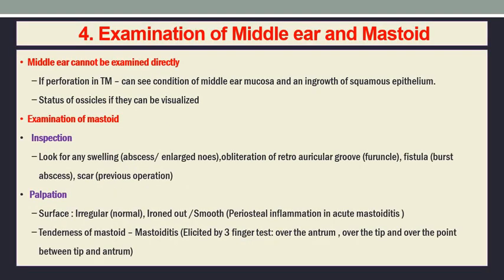Coming to examination of the middle ear and mastoid: the middle ear usually cannot be examined directly, but when there is perforation of the tympanic membrane, you can see the condition of the middle ear mucosa. If there is any growth such as cholesteatoma or in-growth, you can identify it. The status of ossicles, if they can be visualized — usually when there is perforation, you can see the incus and sometimes even the stapes. Ossicular discontinuity can also be identified. For mastoid inspection, look for any swelling or abscess, obliteration of the post-auricular groove in furuncle or acute mastoiditis, fistula, burst abscess, or scar from previous surgery.